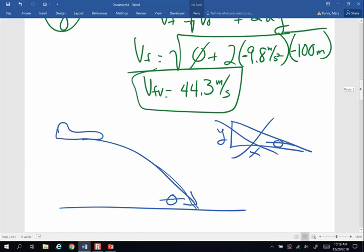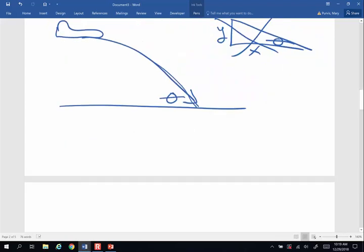So what's going to determine the angle of impact? Well, that is going to be a vector triangle that's a combination of the final vertical velocity and the horizontal velocity.